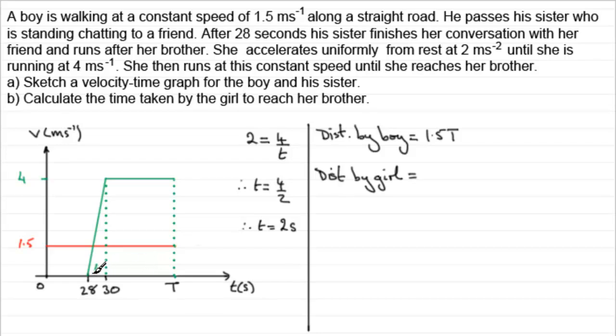So if we add the parallel sides together we've got this length which is going to be t minus 28, and we add that to this length up here which is going to be t minus 30. We multiply that by the distance apart which is 4, and we divide all the answer by 2. The area of a trapezium then.